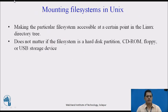In order to access a file system in Linux, you first need to mount it. Mounting a file system simply means making the particular file system accessible at a certain point in the Linux directory. When mounting a file system, it does not matter if the file system is a hard disk partition, CD-ROM, floppy, or USB storage device. You simply need to know the device name associated with the particular storage device and a directory you would like to mount the file system on. Having the ability to mount a new storage device at any point in the directory is very advantageous.